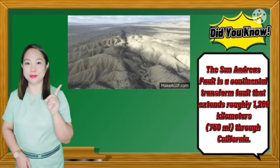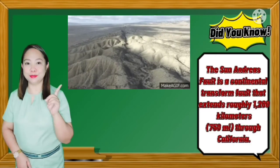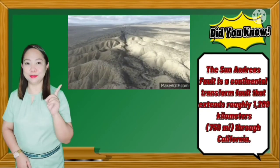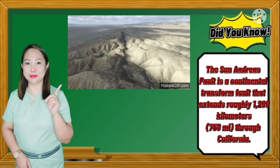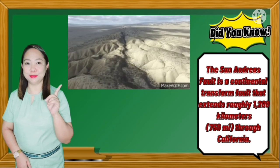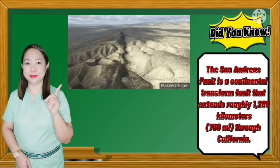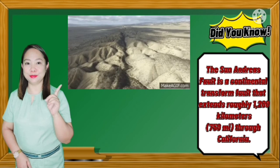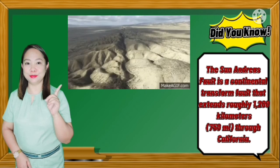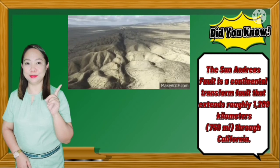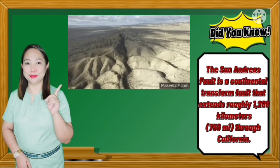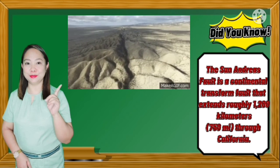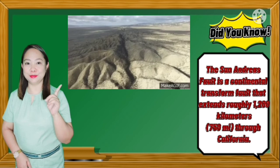Did you know that the San Andreas Fault is a continental transform fault that extends roughly 1,200 kilometers through California? It forms the tectonic boundary between the Pacific Plate and the North American Plate, and its motion is right-lateral strike-slip.